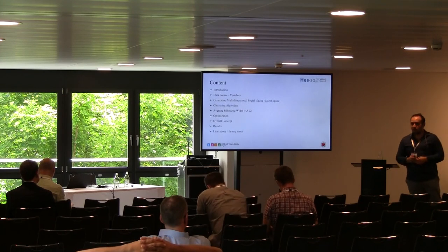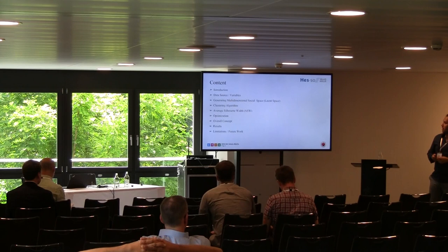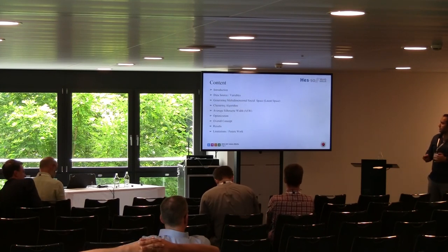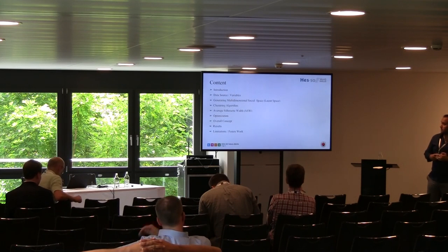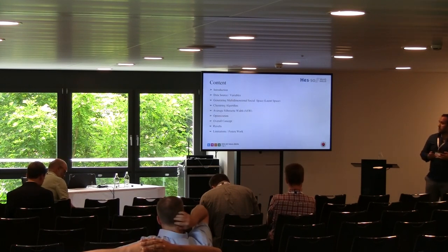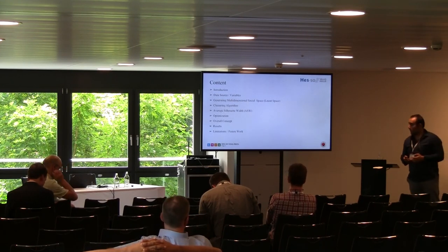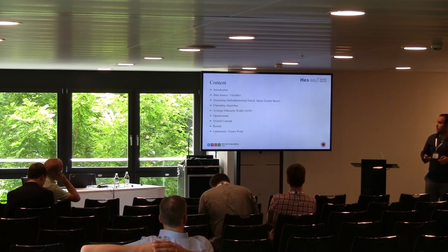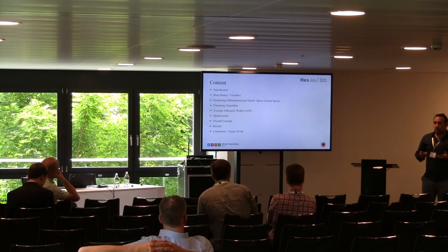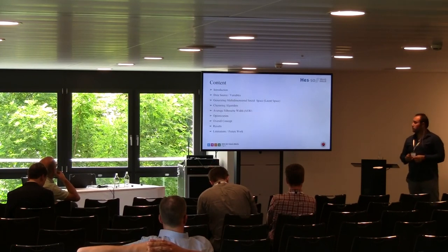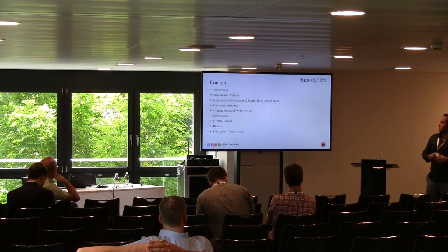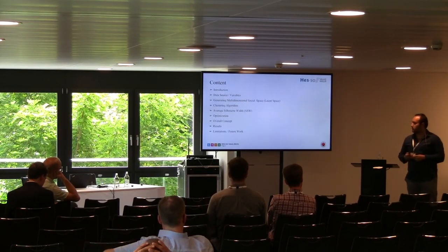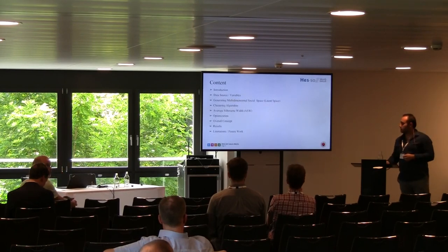First, I will start with a brief introduction slide. I will explain what are the messages of the paper, then explain the components of our methodology: which data source we used and which active variables we extract from it, what is the multidimensional social space or latent space and how we use it, which clustering algorithm we use and its relationship with the latent space, what is average silhouette width and how we use it, and how we handle the optimization problem. Then I will combine these components in an overall concept slide, pass to our results, and finish with limitations and future work.